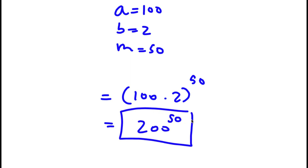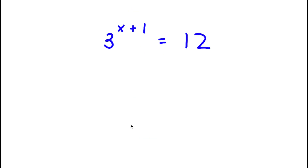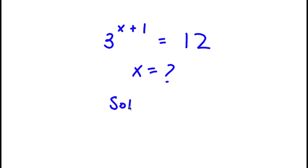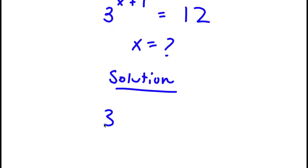So 200 to the power of 50 is my answer. Now I'm going to be solving 3 to the power of x plus 1 is equal to 12, and I want to find the value of x. For my solution, I start with 3 to the power of x plus 1 is equal to 12.